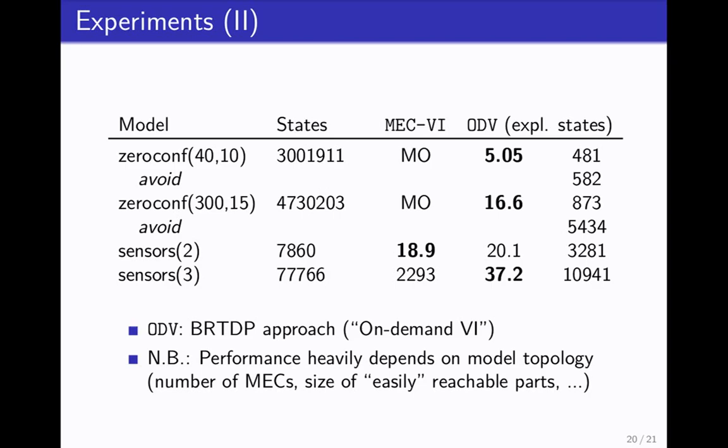And now, here comes the cool thing. This machine learning guided approach, which we call ODV, on-demand value iteration. The most interesting model is the zero-conf model, which has, in this instance, like 4 million states. But to compute a value precise to 10 to the minus 6, we only needed to explore like a thousand states of this million. We needed 16 seconds to do that. But in a new implementation, we got this down to roughly a second or something. So it really works. For some models, for other models, it's the same as the previous approach. It just depends on the topology. If the whole region of the state space is interesting, you have to explore everything. There's no way around it.